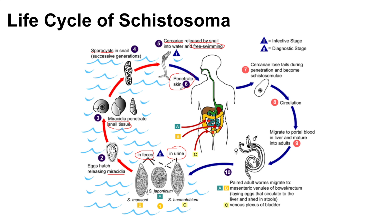When the cercariae penetrate into the skin, they lose their tail and become a schistosomula. The schistosomula can then enter the circulation of the infected individual, migrate to the portal blood in the liver, and mature into adults, whereby the adult worms can migrate into the mesenteric venules of the bowel and rectum. They lay eggs, which can be shed in the stool into a water source, and then the cycle begins again.